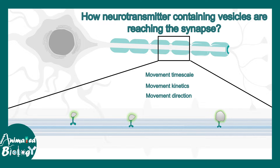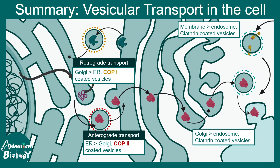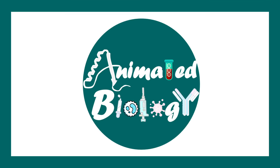Overall, we learned how retrograde and anterograde transports are mediated by different kinds of vesicles — COP1 coated, COP2 coated, and clathrin coated — and how they orchestrate different steps of vesicular transport to different compartments. If you liked this video give it a thumbs up, don't forget to like, share, and subscribe, and please share with your friends. See you in the next video.